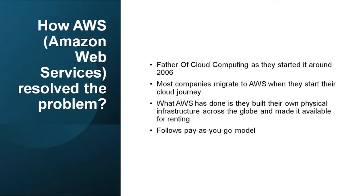AWS builds their own physical infrastructure, then uses virtualization, and then these servers are available for rent using the portal using the pay-as-you-go payment model. This is a very important concept that can be asked in interviews: what is the meaning of pay-as-you-go? Pay-as-you-go means that you need to pay for the resources only when you use them — not in advance. When you use some resources in AWS, you are billed for those resources only, and then you get your monthly bill which you have to pay off. It is like renting services from AWS.